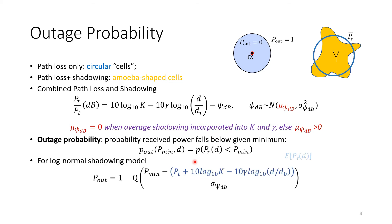For the log-normal case, if you have a Gaussian distribution and want to find the probability that the value is below a given threshold, we use the Q-function. Specifically, the outage probability equals one minus Q of the threshold minus the mean from the model, all divided by the standard deviation — you subtract the mean and divide by the standard deviation.